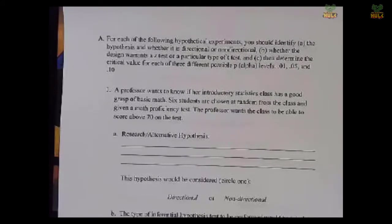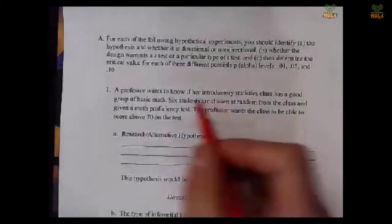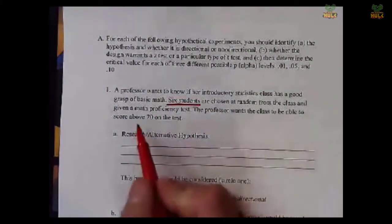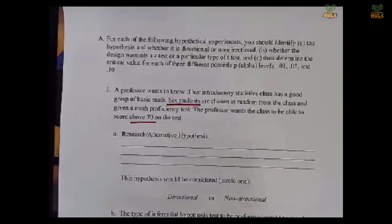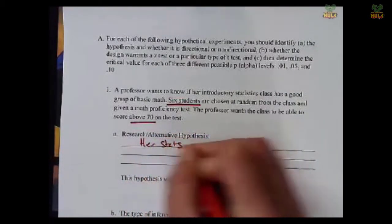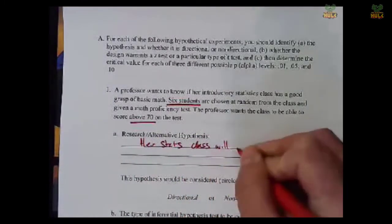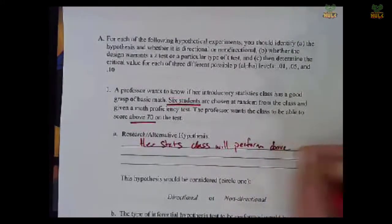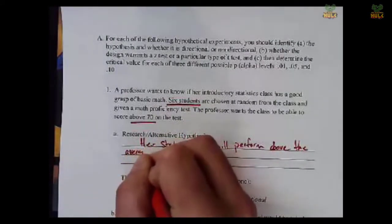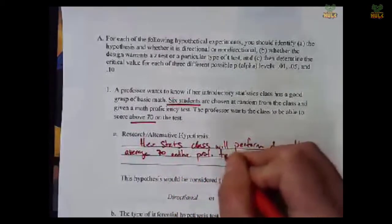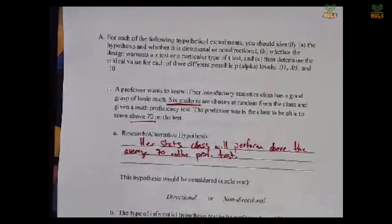So a professor wants to know if her introductory statistics class has a good grasp of basic math. Six students are chosen at random from the class and given a math proficiency test. The professor wants the class to be able to score above 70 on the test. So what do you think is the professor's hypothesis here? You get the idea.